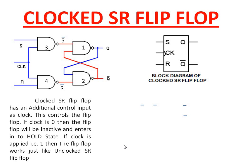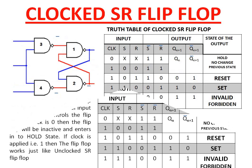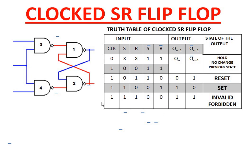The truth table and the block diagram of the clocked SR flip-flop are shown here. The block diagram shows the PGT — that is, positive going transition — of a clocked SR flip-flop. That means this flip-flop will be active when the clock is applied at a positive going transition, that is when the clock pulse is making a transition from low to high state. The working of the clocked SR flip-flop can be explained with these five cases.